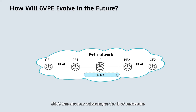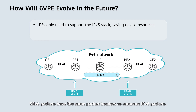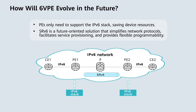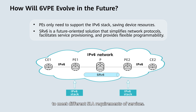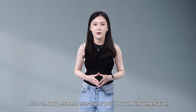SRv6 has obvious advantages for IPv6 networks. After SRv6 is deployed, the entire network runs with IPv6, with PEs only needing to support the IPv6 stack. This helps conserve device resources. SRv6 packets have the same packet header as common IPv6 packets, so network nodes can communicate based purely on IPv6 reachability, simplifying network protocols and facilitating service provisioning. In addition, SRv6 provides flexible programmability to meet different SLA requirements of services. All in all, SRv6 performs better than 6VPE in IPv6 VPN implementation.